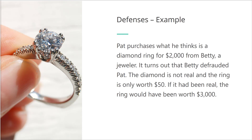If Pat opted for rescission and restitution, then Pat would give back the ring and Betty would return the two thousand dollars. However, Pat's benefit of the bargain here is one thousand dollars — the difference between the price he negotiated and the value of a ring of the kind he was promised. It would therefore make sense for him to try and preserve that benefit.